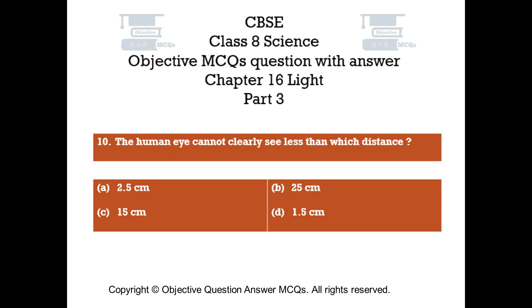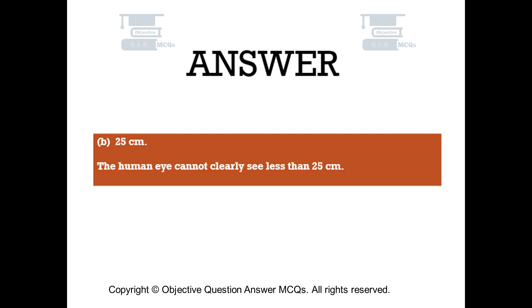Question number 10: The human eye cannot clearly see less than which distance? Option A: 2.5 centimeters, Option B: 25 centimeters, Option C: 15 centimeters, Option D: 1.5 centimeters. The right answer is Option B: 25 centimeters. The human eye cannot clearly see less than 25 centimeters.